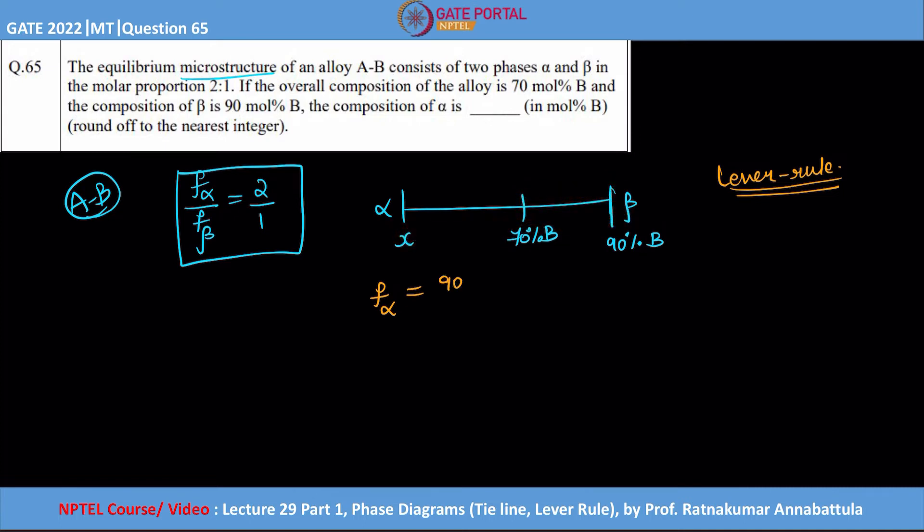That is equal to 90 minus 70 divided by total, which is 90 minus x. Similarly, F of beta is equal to the opposite length, which is 70 minus x, divided by total, which is the same 90 minus x.